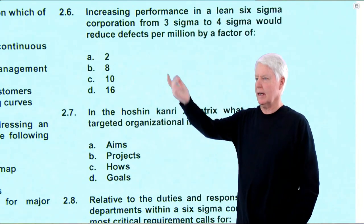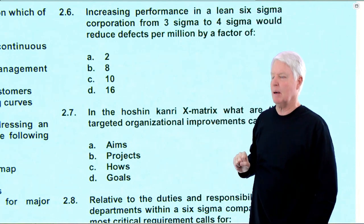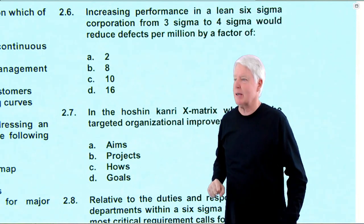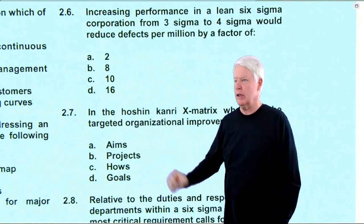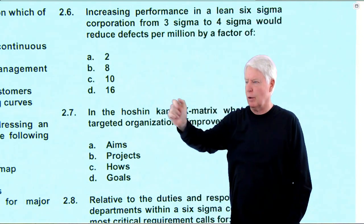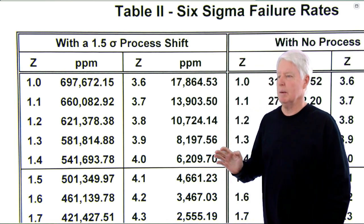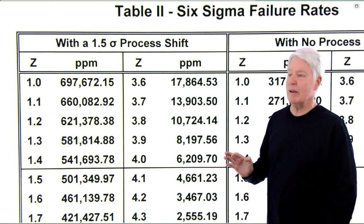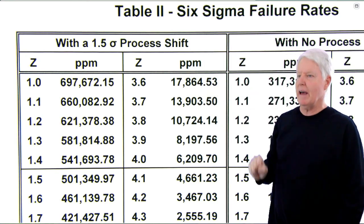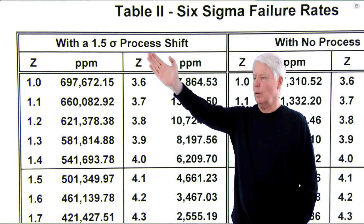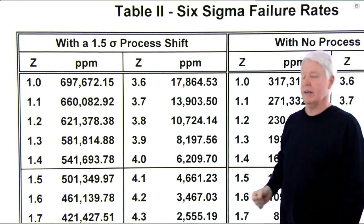Here we are at question 6. Increasing performance in a lean Six Sigma corporation — meaning a one-and-a-half sigma shift — from three sigma to four sigma would reduce defects per million by a factor of what? The table you'll need to solve this is in the appendix; in my revision it's page 3, Six Sigma failure rates, with a one-and-a-half sigma process shift.